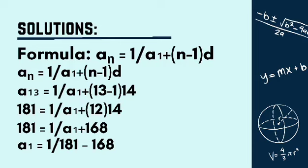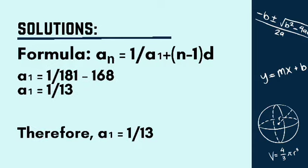Then, we will subtract the two numbers on denominator. That will be a₁ = 1/13. Therefore, our a₁ = 1/13.